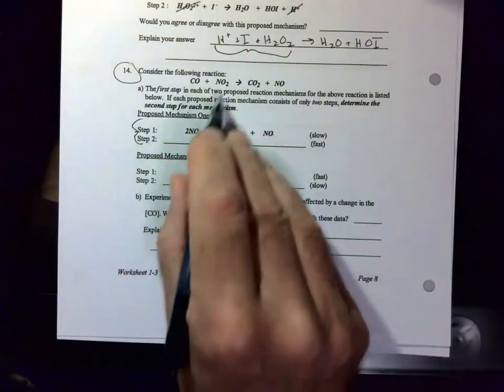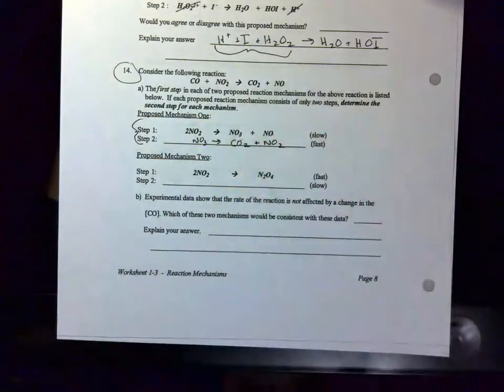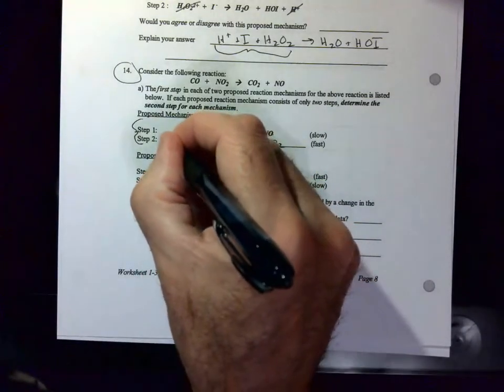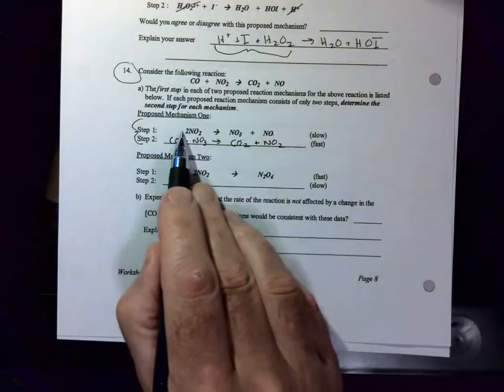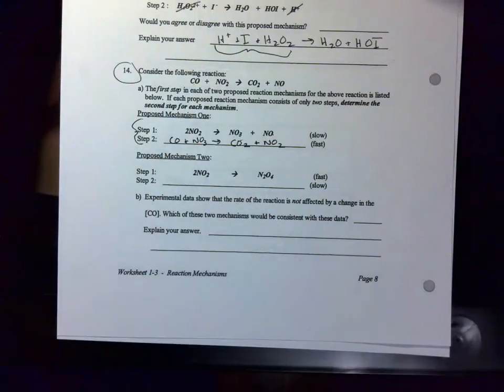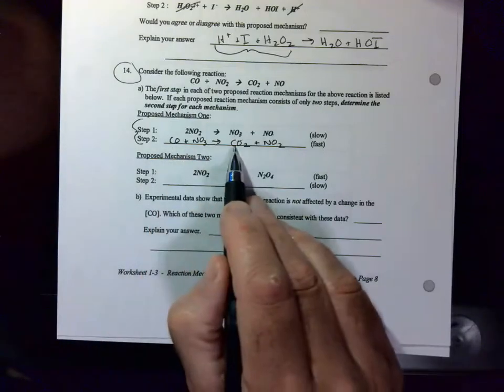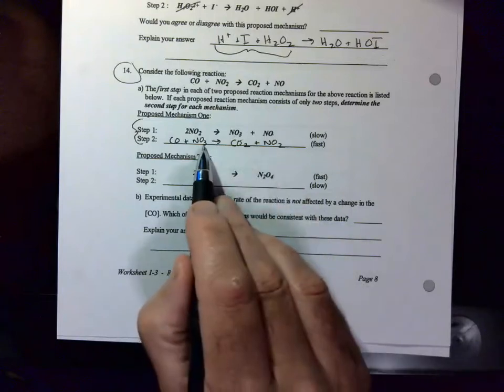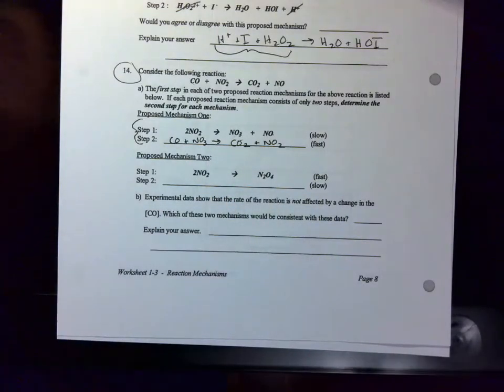I've got two NO2s here, but only one up here. So I'm going to have to be able to cross out one of those two NO2s. The other thing I'm going to need is a CO because I have a CO there, but I don't have one on this side down here. Let's make sure this balances. 1C, 1C, 1N, 1N, 4Os, 4Os. So this would be our mechanism.